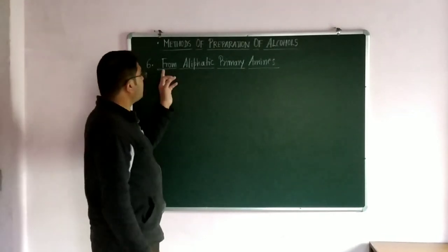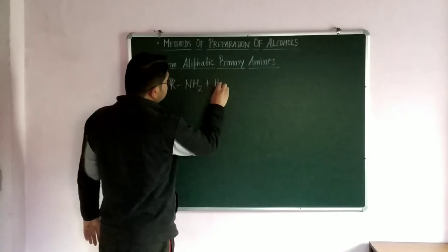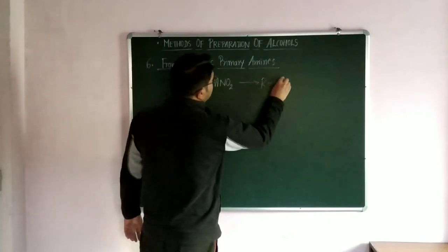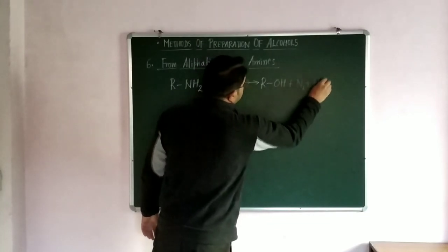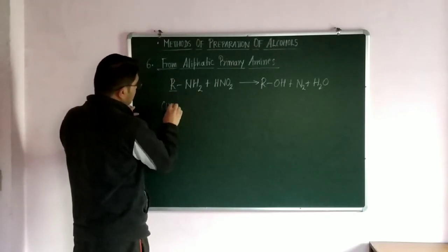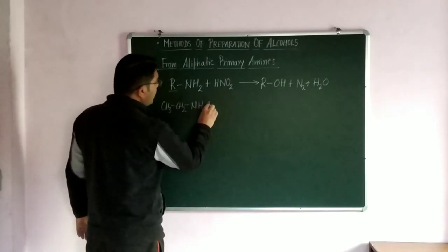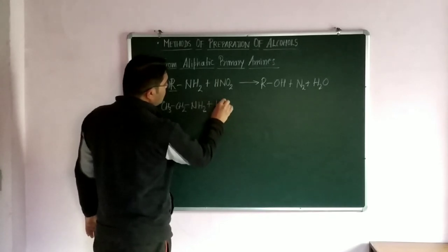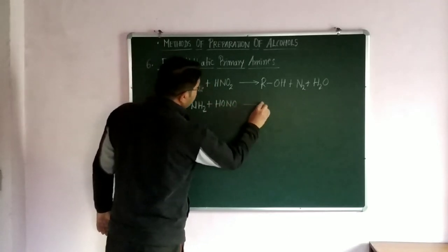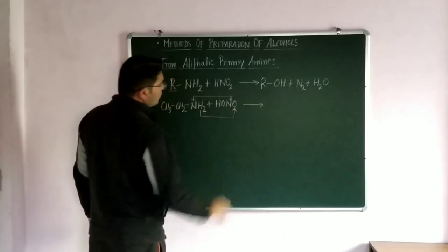Now the next reaction is from aliphatic primary amines. Formula for amines, that is RNH2, when it is treated with nitrous acid that is HNO2. In this reaction, this amine gives ROH with the elimination of N2 and H2O. When we observe this reaction, R is an alkyl part. If we replace this R by ethyl part CH3CH2 and NH2, this is ethylamine and simply we write HNO2 in this way, that is HONO.